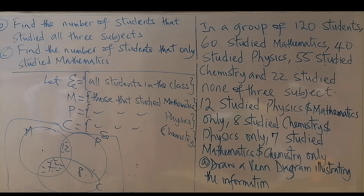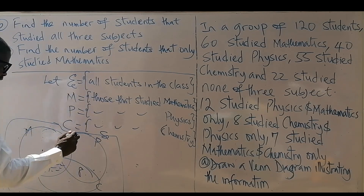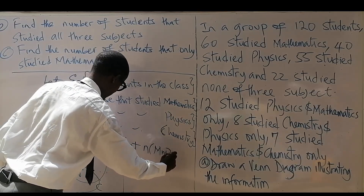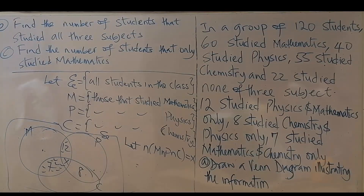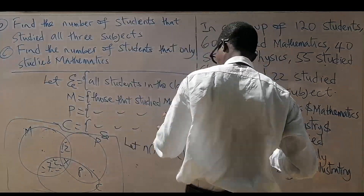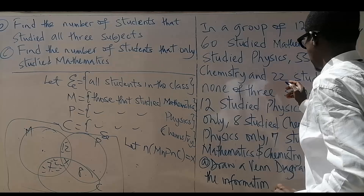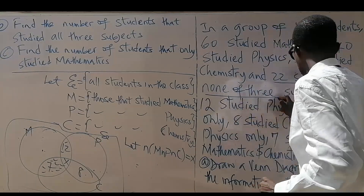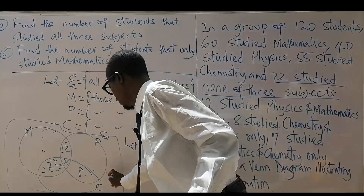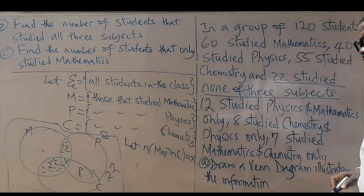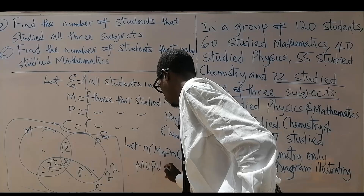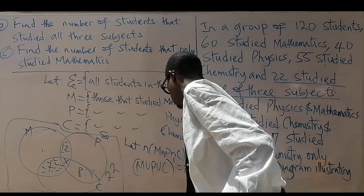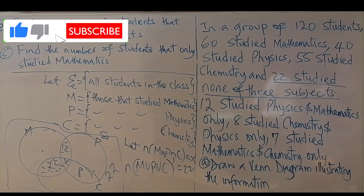To find the number of students that study all three subjects, we don't know that — that's what we are looking for, so we call it X. We are also told that 22 studied none of the three subjects, so that would be outside the three circles. We can call that M union P union C complement, and that equals 22.